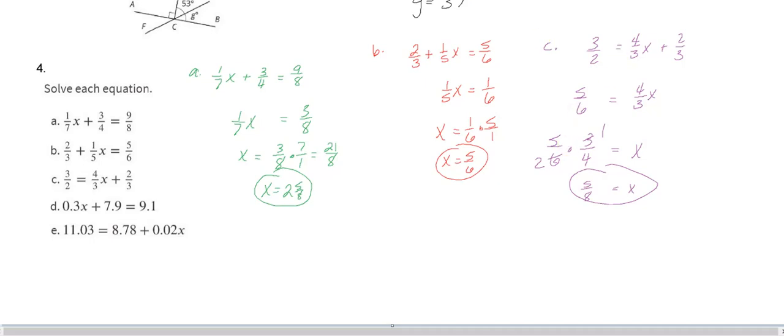Alright, and then part D. So D comes along with a bunch of decimal work. 0.3x plus 7.9 equals 9.1. So let's find out what 3 tenths x is worth. So we do, think of like 91 minus 79. Okay, there, and the difference is 12, right? So 1.2. And then how many times, what times 3 is 12? You can think of it that way. So it'll be 4. And you want just one decimal move so it is actually equal to 4. So x is 4 there on D.